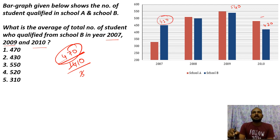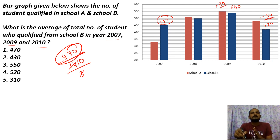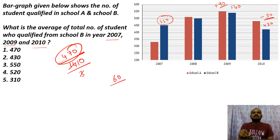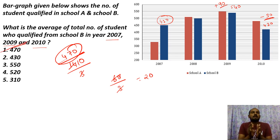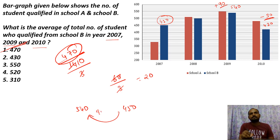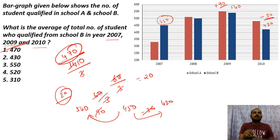Now to find the average, compare with 450 as the base. The adjustments are minus 30, plus 90, plus 90, minus 30. So 30 and 60 gives 60, divided by 3 gives 20. Add this value: 450 plus 540 plus 420, then add 60. The final answer is 470.